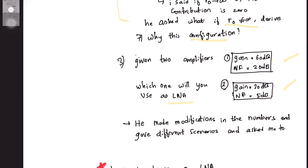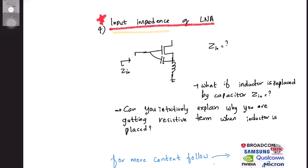The last question asked on LNA was about input impedance. The interviewer asked me to write the input impedance equation for the LNA, and to derive it. I had already practiced it, so I wrote it quickly. He then replaced the inductor with a capacitor and asked me to rewrite the equation, and asked why I was getting a resistive term even though there is no resistor present in the circuit.